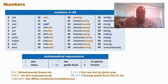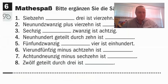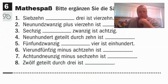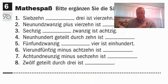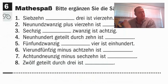Let's have some fun with math. So we have 'siebzehn' — 17 — blank 'drei' — 3 — equals 14. How do 17, 3, and 14 go together? Siebzehn minus drei ist vierzehn — 17 minus 3 is 14.